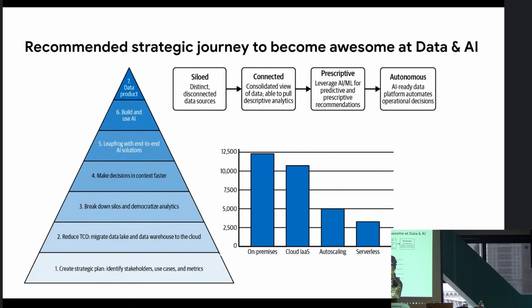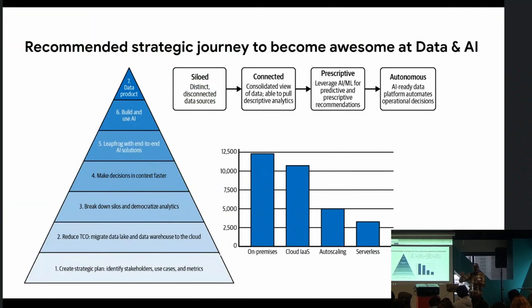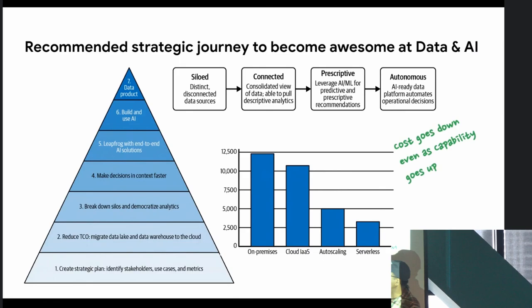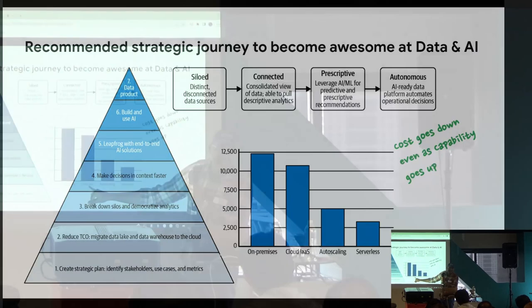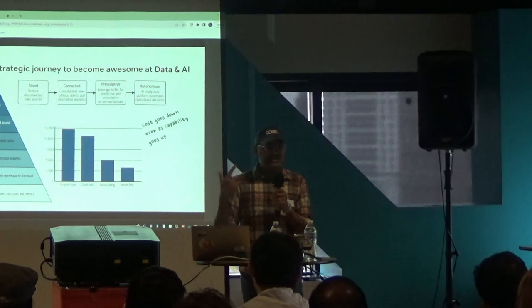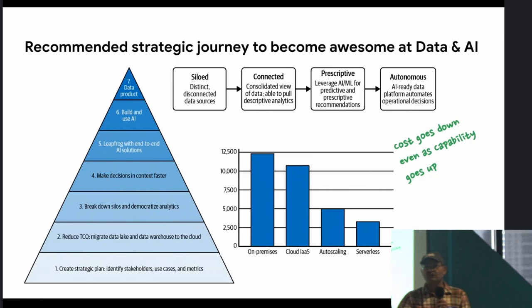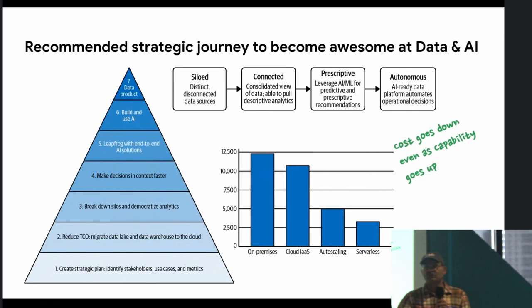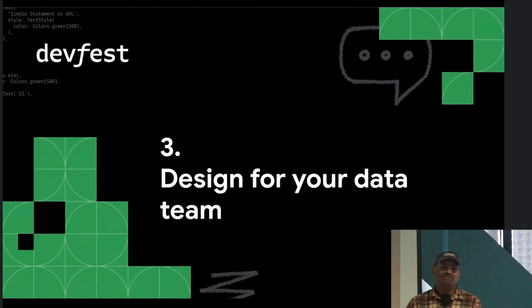Finally, you take what you've created, put APIs in front of them, and make them data products. That's the strategic journey from siloed systems all the way to data products. As you go from on-premises to infrastructure as a service, to separation of compute and storage, to fully serverless data products that scale on demand, your cost actually starts to go down because you're managing less and less infrastructure — while your capability goes up. Not everyone ends up at step seven because it's a multi-year journey, but at every step you're getting better things.